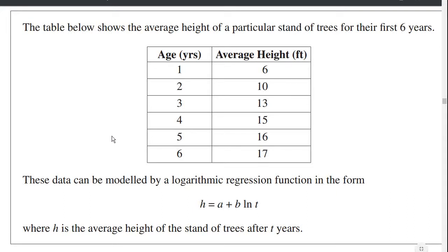The table shows the average height of a particular stand of trees for the first six years. One year, it's six feet tall, two, it's ten, three, it's thirteen, four, it's fifteen, five, sixteen, six, seventeen.